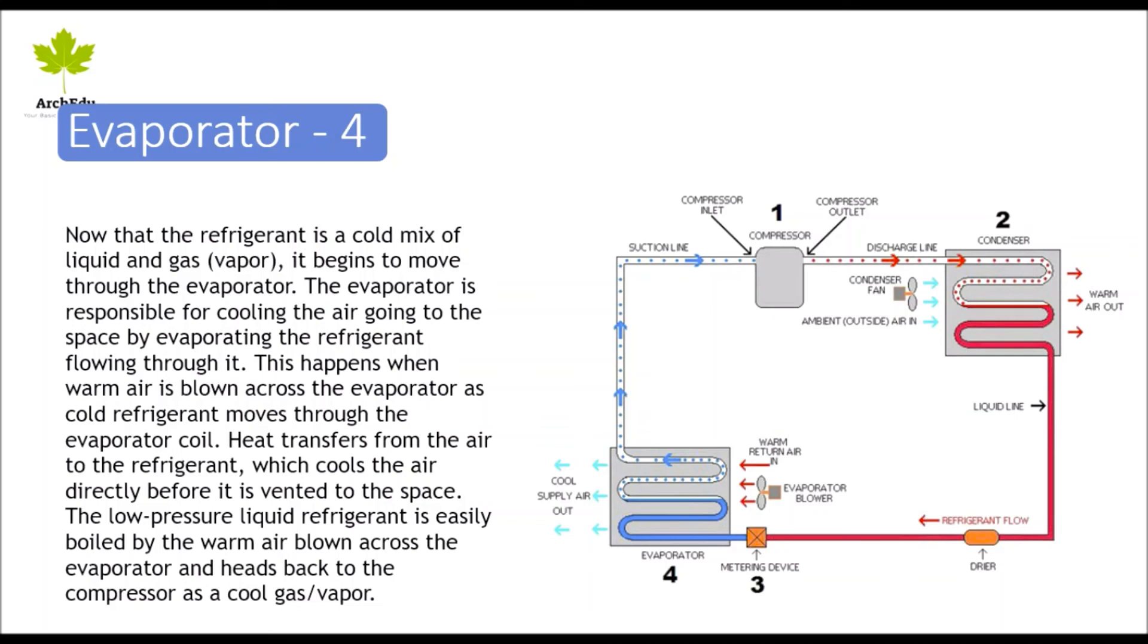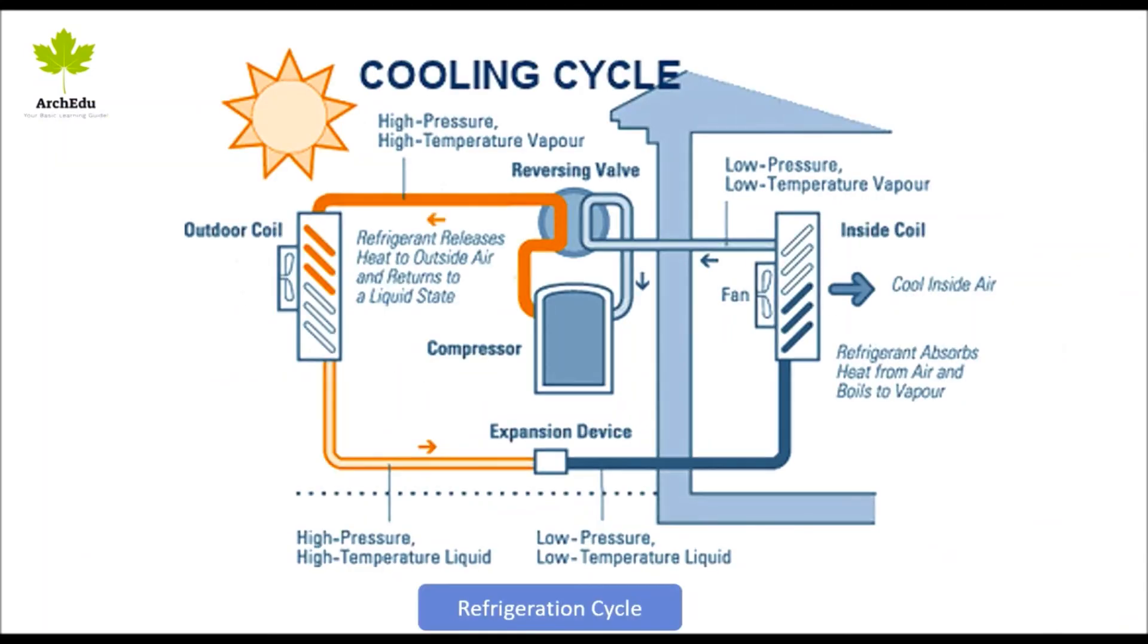The low-pressure liquid refrigerant is easily boiled by the warm air blown across the evaporator and heads back to the compressor as a cool gas or vapor. Now you can see the right part as inside the room and the left part outside. You can also represent it as cooler air and warmer air—blue color and orange color respectively.